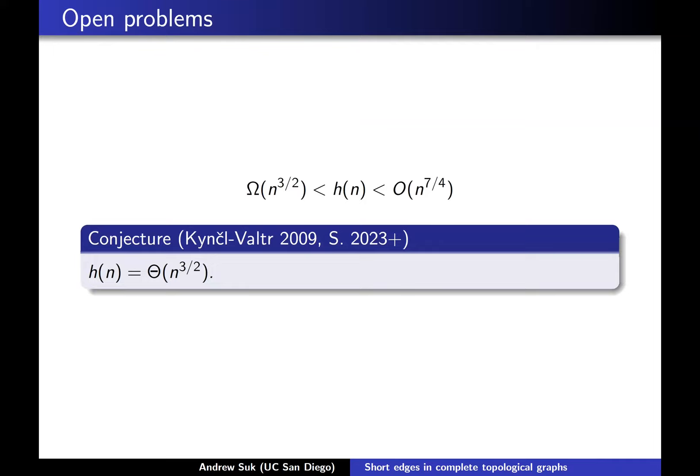These are my last two slides on open problems. The first one is about finding short edges. Honestly my main motivation was just to get the polynomial improvement. But it would be nice to determine the exact exponents, and as I mentioned, it'd be nice to either prove or disprove the conjecture that h(n) is on the order of n^(3/2). I think the tools and techniques I described are a bit of an overkill, but it was the only thing I knew how to do.